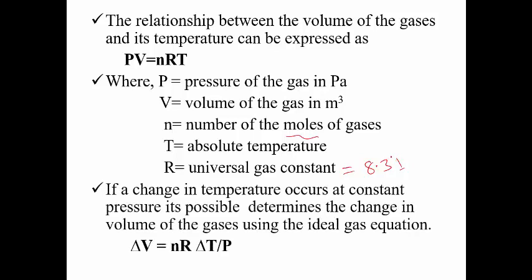If a change in temperature occurs at constant pressure, it is possible to determine the change in volume of the gas using the ideal gas law. Rearranging this, you may write P × ΔV = NR × ΔT. From this, if you divide both sides by pressure P, this cancels out and change in volume becomes NR × ΔT over P. This is the equation used to determine the expansion of gases.